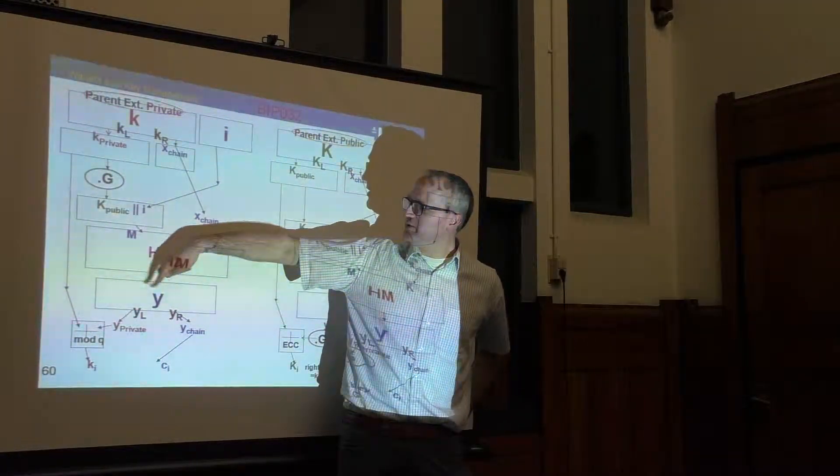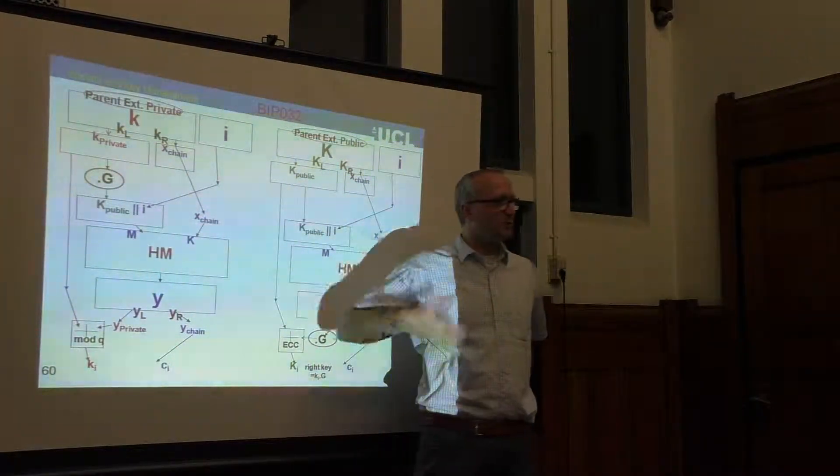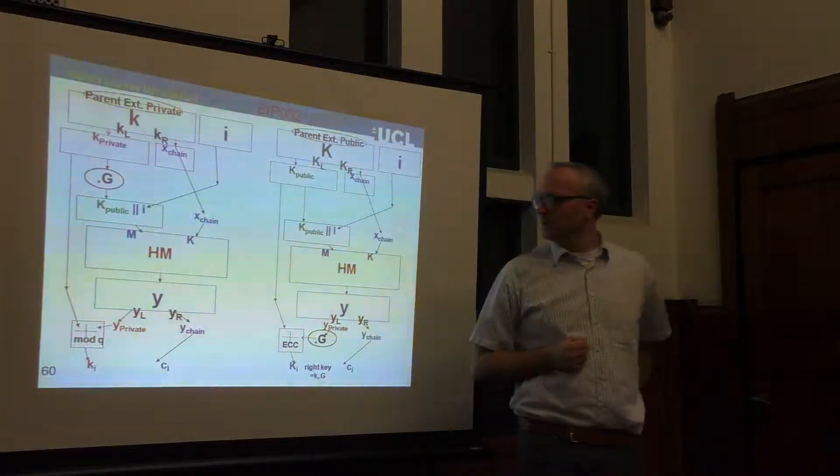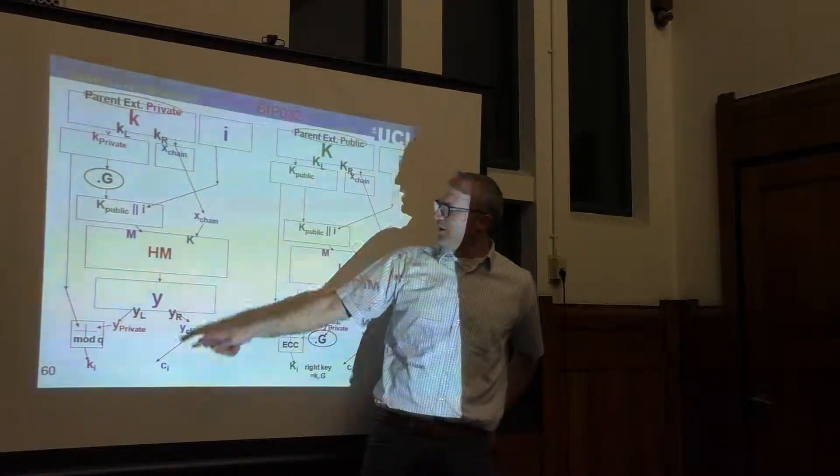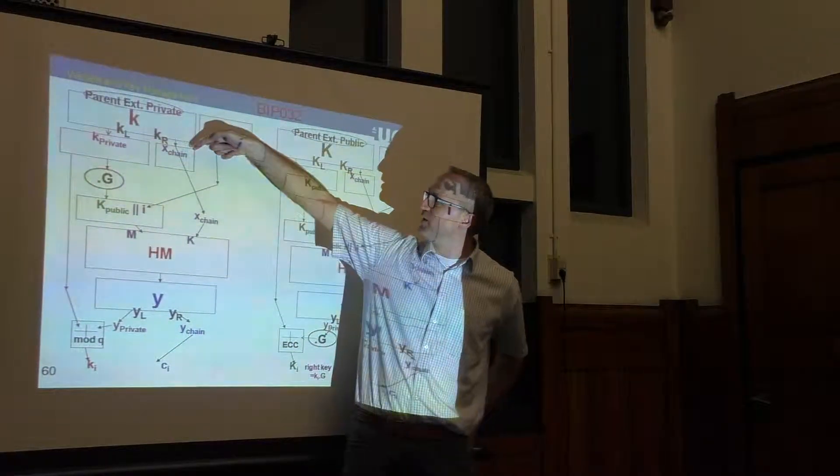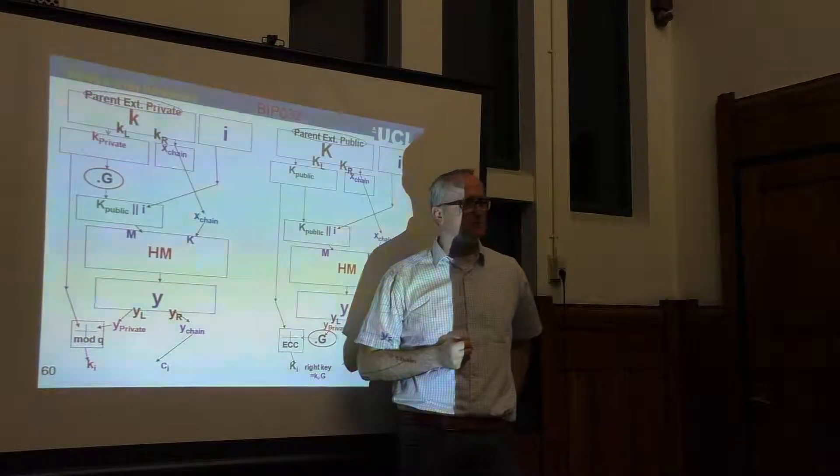The output is very interestingly split into two distinct pieces. For example, if you know one piece, you cannot know the other, which is important. And one of them becomes the chain variable for the next generation. This chain variable will be the same as here for the next level of key generation, Q onto L1.